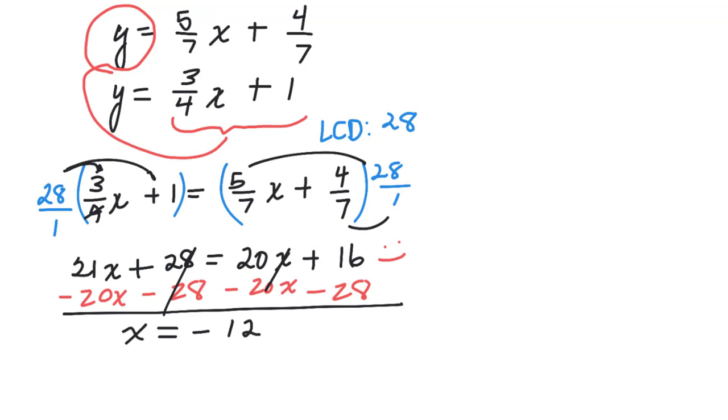Now I can pick either equation and plug in what x equals. I probably would pick the second one because I see that 12, the 4 would go in nicely. So I take this second equation. And where I see an x, I plug in a negative 12. And so 4 into negative 12 is negative 3. So y equals negative 9 plus 1, or y equals negative 8.